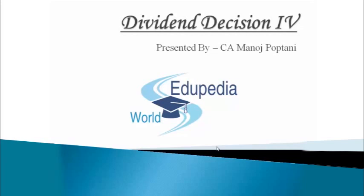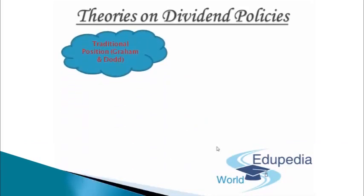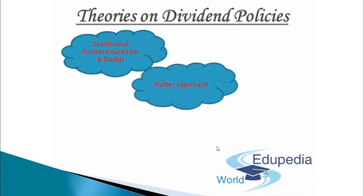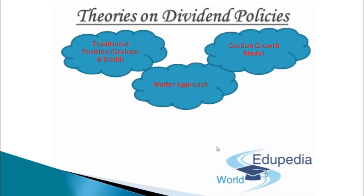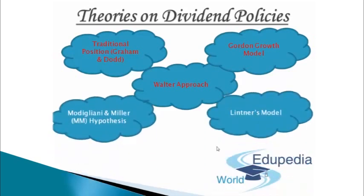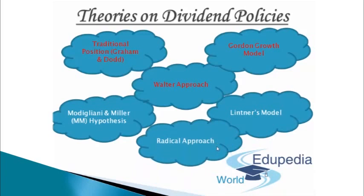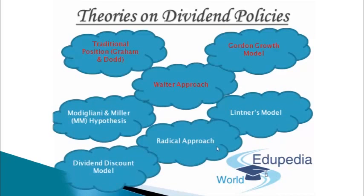Let's move with the fourth presentation, in which I will be talking about the remaining topics of dividend decision. By now we have already covered three of our major theories. I will be covering two major theories in this particular presentation, while the remaining two — that is the Modigliani-Miller and the Dividend Discount Model — I will be covering in my next forthcoming presentation.